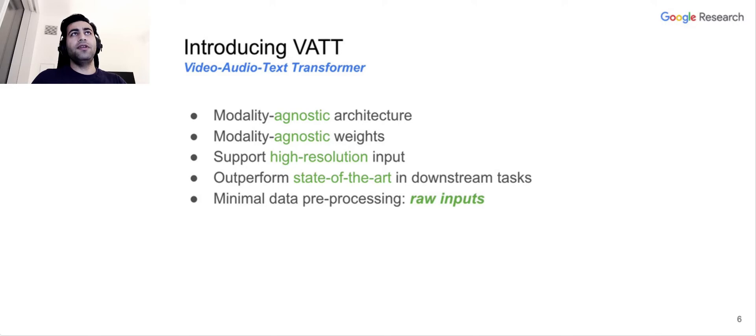So we introduced VAT, Video, Audio, and Text transformers. VAT relies on a modality agnostic architecture. And one of the most obvious choices is transformers. This enables us to have the option of modality agnostic weights. So having only one backbone shared across different modalities for the full forward pass. And this pipeline supports high-resolution inputs and outperforms the state-of-the-art in downstream tasks. And most importantly, it requires very minimal data pre-processing because of operating on raw inputs.